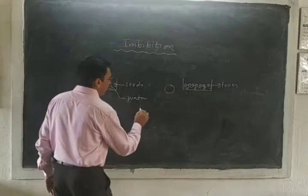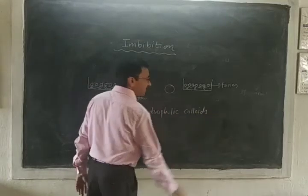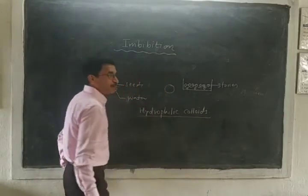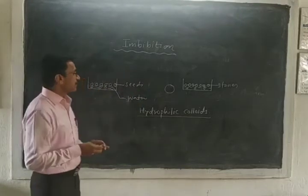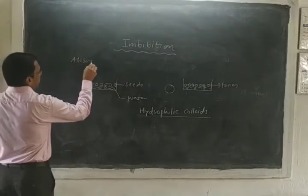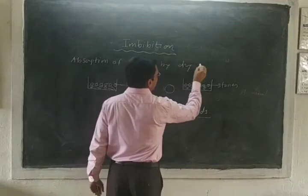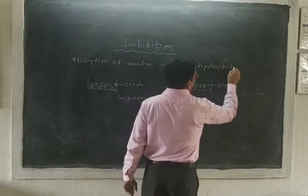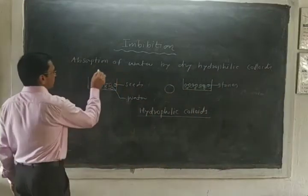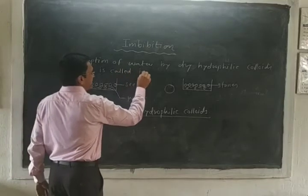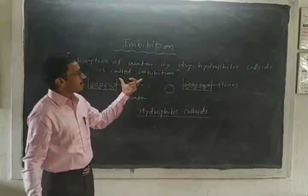Why do seeds absorb the water? Because in the seeds, hydrophilic colloids are present. These hydrophilic colloids absorb the water, and hence the seed size becomes increased — they swell. The simple definition of imbibation is: absorption of water by dry hydrophilic colloids is called imbibation.